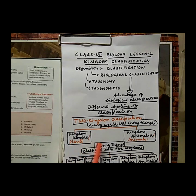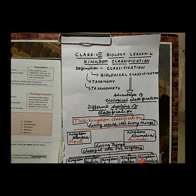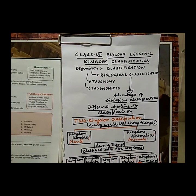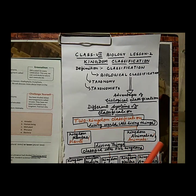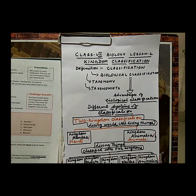Kingdom Animalia is the last of the five kingdoms. It is based on animals — multicellular and heterotrophic in nature. Cell wall is absent; only cell membranes are present. Kingdom Animalia is further divided into two categories: vertebrates, which have a backbone, and invertebrates, which lack a backbone. Human beings belong to kingdom Animalia.